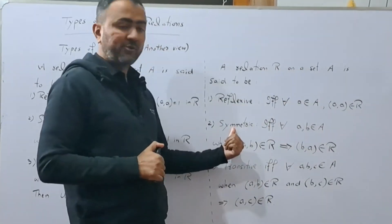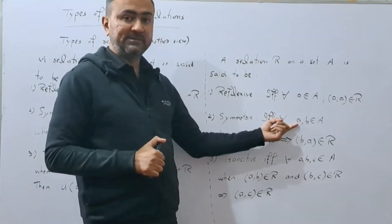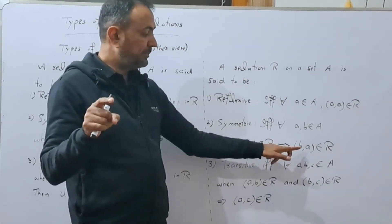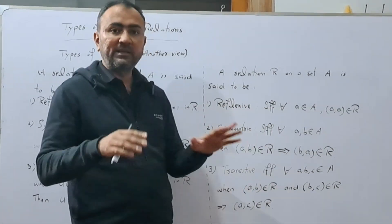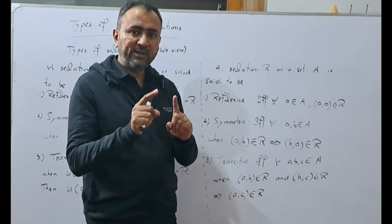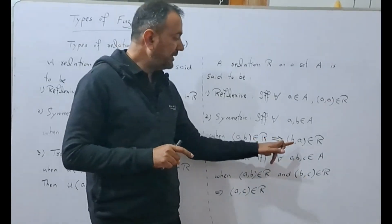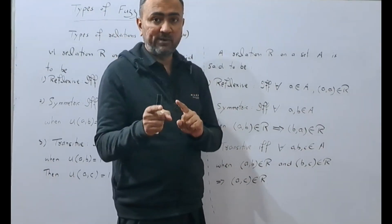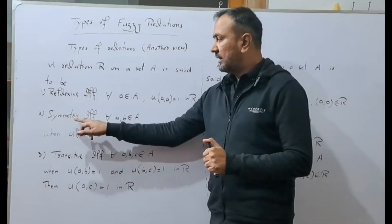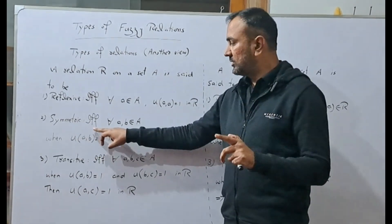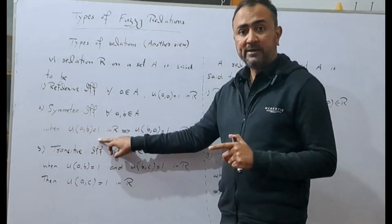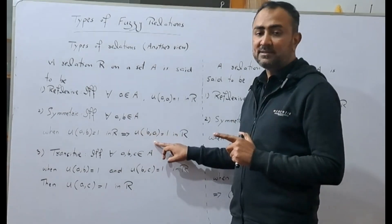A relation R on a set A is symmetric if and only if for every two elements a, b ∈ A, whenever (a, b) belongs to R, it implies (b, a) belongs to R. Translating into membership function terms: (a, b) ∈ R means μ(a, b) = 1, and (b, a) ∈ R means μ(b, a) = 1. So the definition becomes: whenever μ(a, b) = 1 in R, then μ(b, a) = 1 in R.